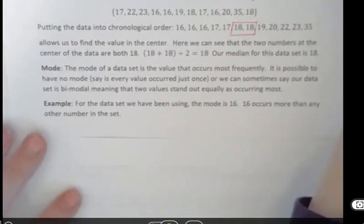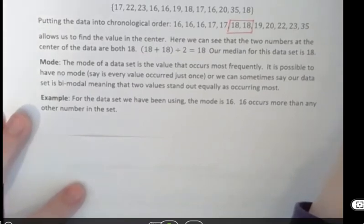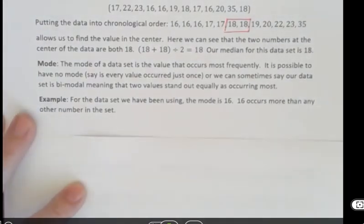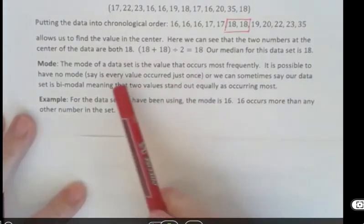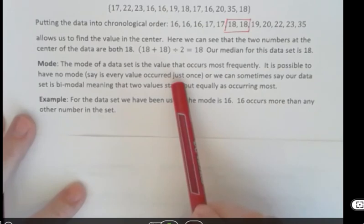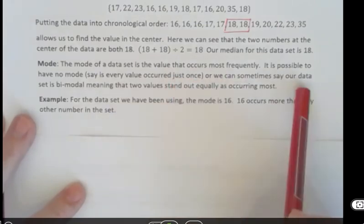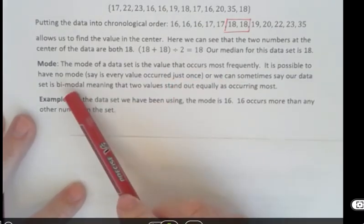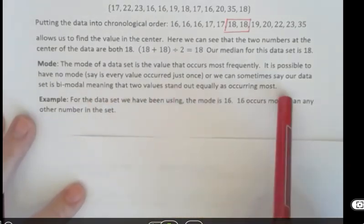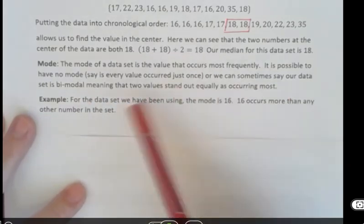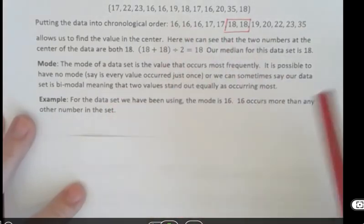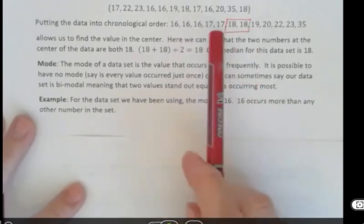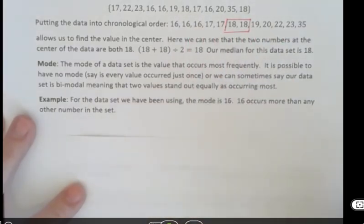And then the mode of a data set is the value that occurs most frequently. It is possible to have no mode if every value occurred just once. We could sometimes say our data set is bimodal, meaning that two values stand out equally as occurring most. But for the data set that we have up here, 16 is the one that occurs the most because it occurred three times where everything else occurred two or one time. So the mode for our data set here would be 16.